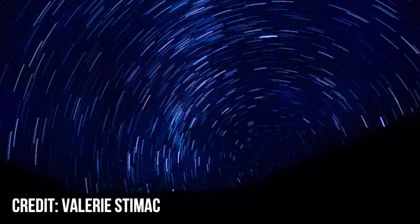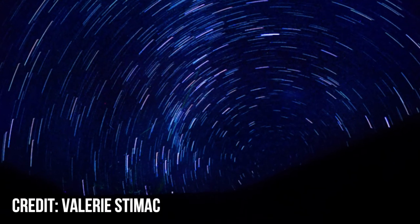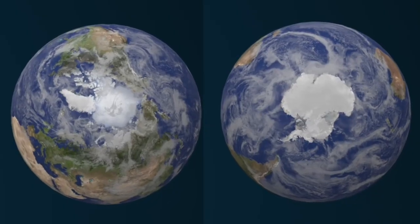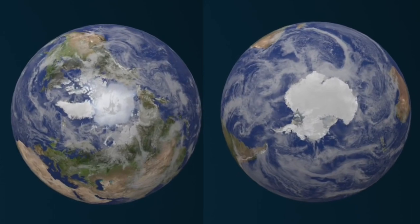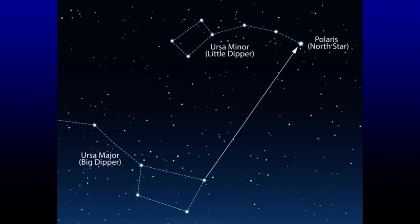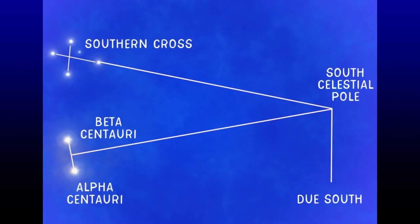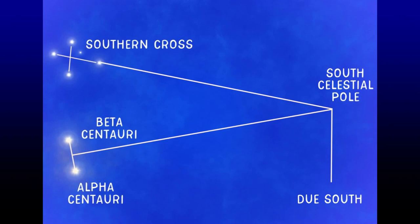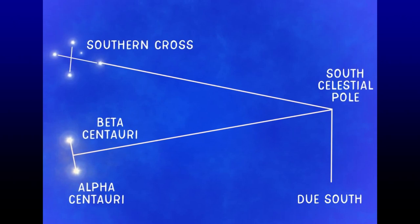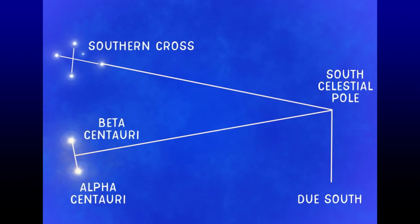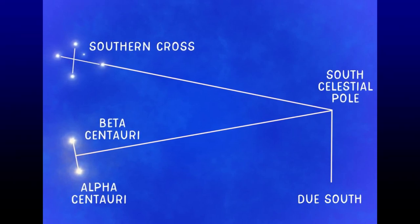A cool tip if you want to create a star vortex, similar to this great image by Valerie Stimmick, is to point your lens at the north or south pole. In the northern hemisphere use Polaris, the northern star, as your guide. But if you live in the southern hemisphere like me, draw a line through the Southern Cross and then another between the two pointer stars, and at the intersection you will find due south.